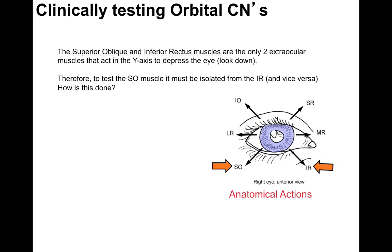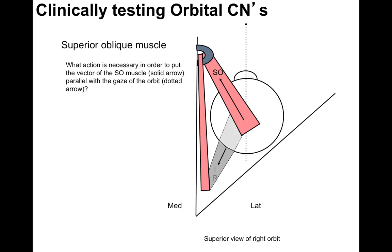The superior oblique and inferior rectus muscles are the only two extraocular muscles that act in the y-axis to depress the eye and look down. Therefore, to test the superior oblique, it must be isolated from the inferior rectus and vice versa.